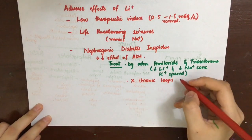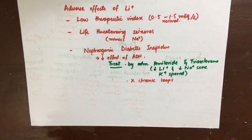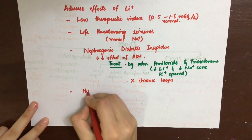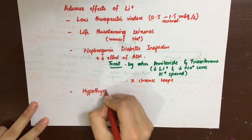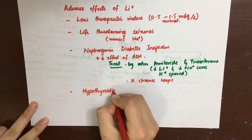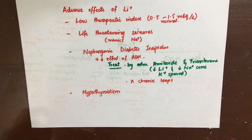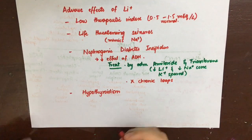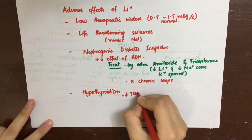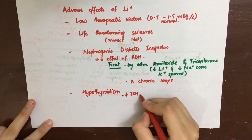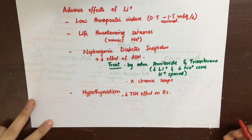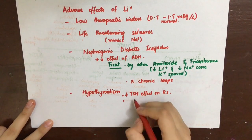Just as lithium inhibits Gs receptors of ADH, it also inhibits the Gs-coupled receptors of TSH by decreasing cyclic AMP, and thus can lead to hypothyroidism. Lithium also inhibits the peripheral deiodinase enzyme, thereby inhibiting the conversion of T4 into T3.